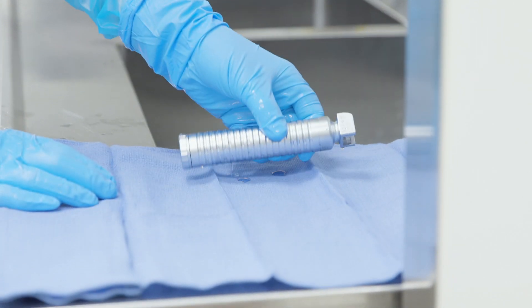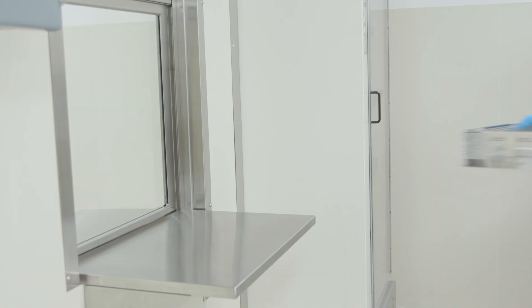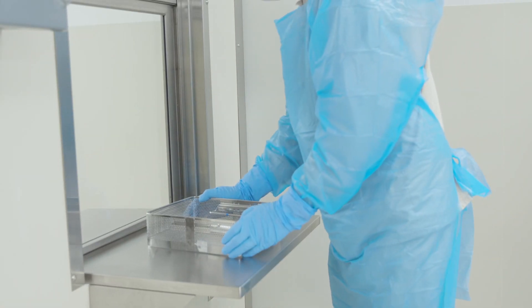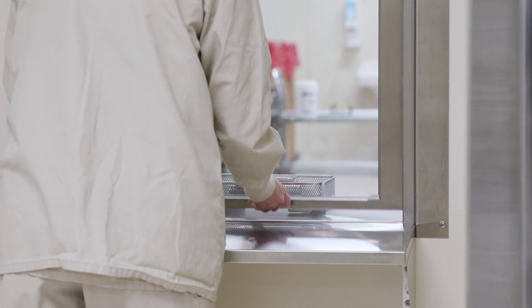Step 1: Washing and scrubbing in the sink. Step 2: Thoroughly drying the handle. Step 3: Passing it through the window onto the clean side of the sterile processing department.